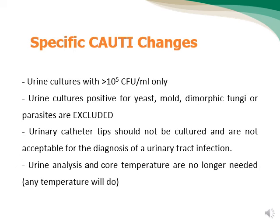Several specific changes regarding KAUTI criteria should be noted. First, the urine culture must exceed 10^5 colony-forming units per milliliter; any culture below this should not be considered part of the KAUTI definition. Second, bacteria are the only accepted causative organisms, so we should exclude any urine cultures positive for yeast, mold, dimorphic fungi, or parasites. However, if a patient has a positive urine culture for a specific bacterium alongside candida, it can still be considered KAUTI. Third, urinary catheter tips should not be cultured and are not acceptable for UTI diagnosis. Lastly, urine analysis results are no longer part of the criteria, and core temperature assessment is unnecessary — any recorded temperature will do.